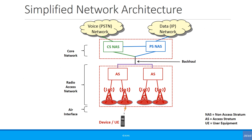This is a simplified network architecture where you can see you have the access network — which would be the Node B, RNC plus Node B in 3G, the E Node B in 4G, and in 2G it would be the BSC and the BTS — and you have the core network.